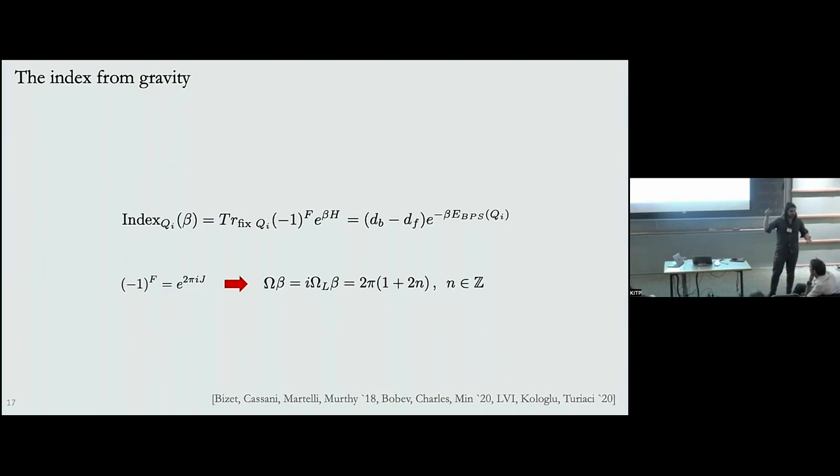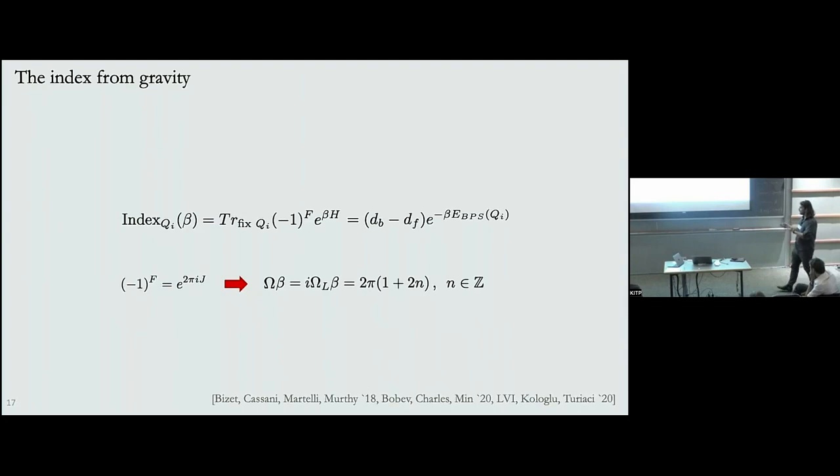The reason this is a useful trick is that it tells you that instead of looking at static extremal solutions, you should be looking at black holes that have an angular velocity, because angular velocity is like the chemical potential for angular momentum. If we turn on an angular velocity we can get this factor of 2πi in front of J.